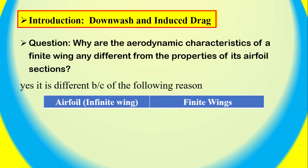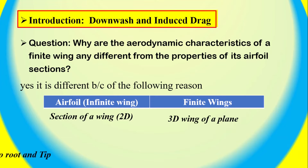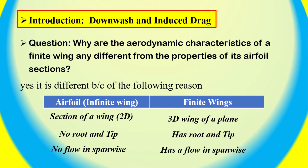An airfoil, or infinite wing, is a section of a wing and is two-dimensional. The flow over an airfoil is two-dimensional — it has no root and tip, it is infinite, with no span-wise flow but has chord-wise flow. A finite wing, by contrast, is a three-dimensional body. It has a root and tip and has tip vortices. It has flow in both span-wise and chord-wise directions, and a span-wise lift distribution.